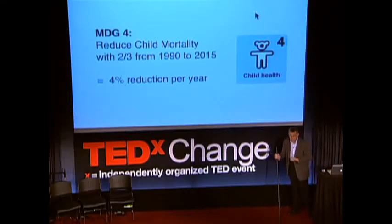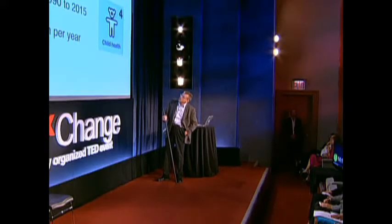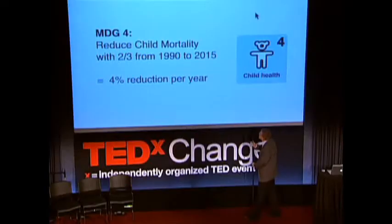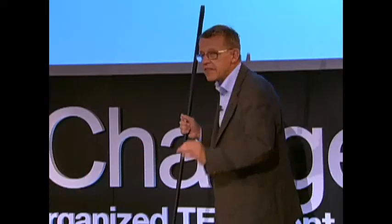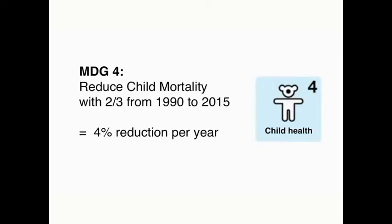There's a second reason I like these development goals, and that is because each and every one is measured. Take child mortality. The aim here is to reduce child mortality by two-thirds from 1990 to 2015 — that's a four percent reduction per year. That's what makes the difference between political talking and really going for the important thing: a better life for people.